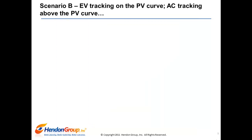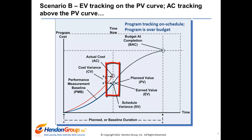In Scenario B, the earned value curve is tracking on the planned value curve while the actual cost curve is tracking above the planned value curve. This communicates there is no schedule variance; however, the program has cost variance. Assuming the program continues at current course and speed, you would expect the program to be approximately on schedule but requiring additional funding to complete the defined scope. If systemic issues cannot be fixed, a common response is to reduce scope to meet the budgeted cost target and deliver the additional capability in a future release. The good news is the program sponsor knows early and can plan downstream initiatives accordingly.